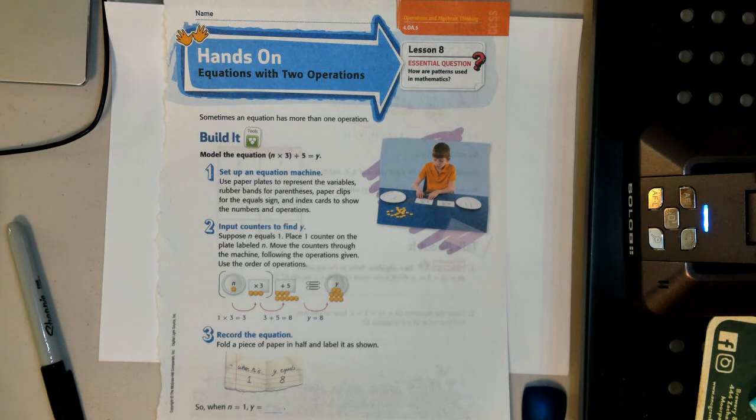Now, we learned in yesterday's lesson about the order of operations, so you have to remember that you always do what's in the parentheses first, then you do multiplication and division in order from left to right, and then addition and subtraction in order from left to right. So you're going to have to remember those rules.